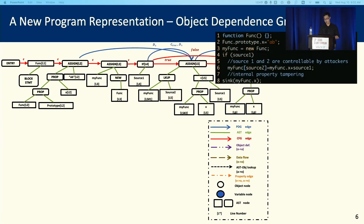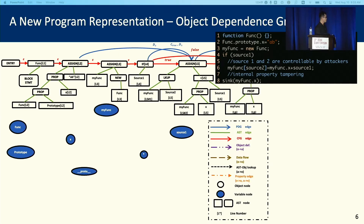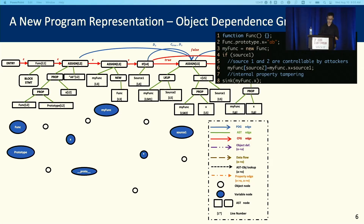To solve this problem, we introduced a new program representation: the object dependence graph. Besides the code property graph, we introduced some more nodes. For example, variable nodes — each variable node represents a specific reference in JavaScript programs. We also have object nodes, and each object node represents a specific object in a JavaScript program.